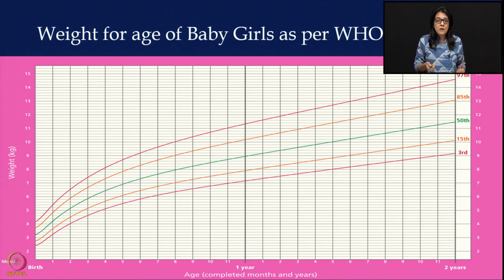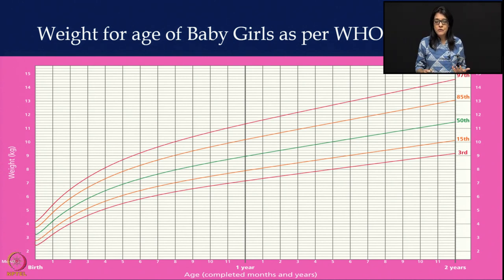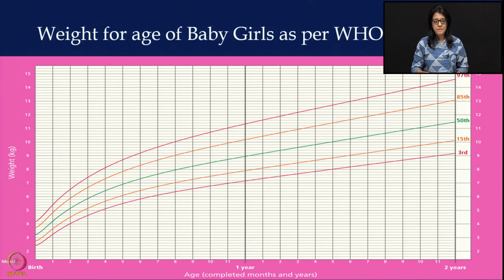We are trying to increase the birth weight of children in India. The average birth weight in India is only 2.7 kg. The average birth weight of a girl child globally is 3.2 kg on the green line. Our children at 2.7 kg fall between the third percentile and 15th percentile — they are not even on the 15th percentile when they are born.